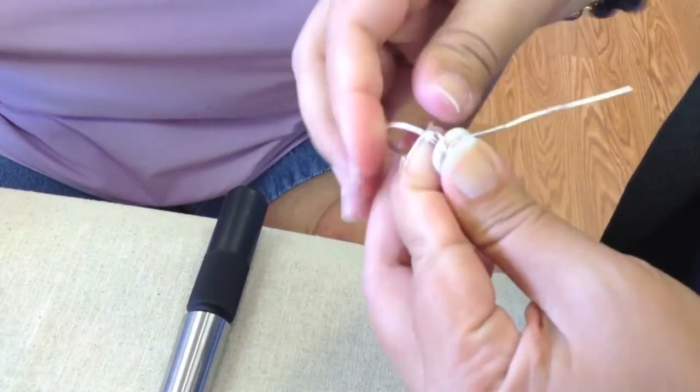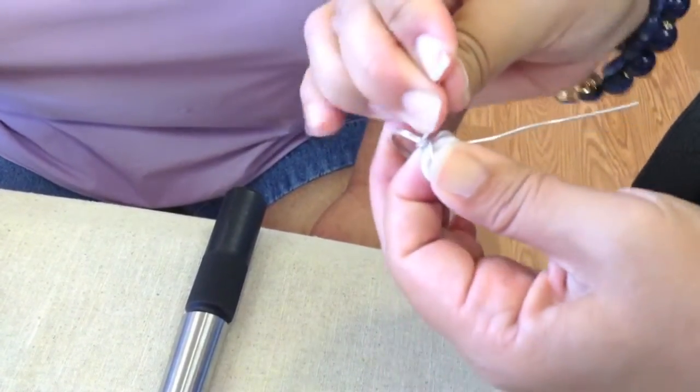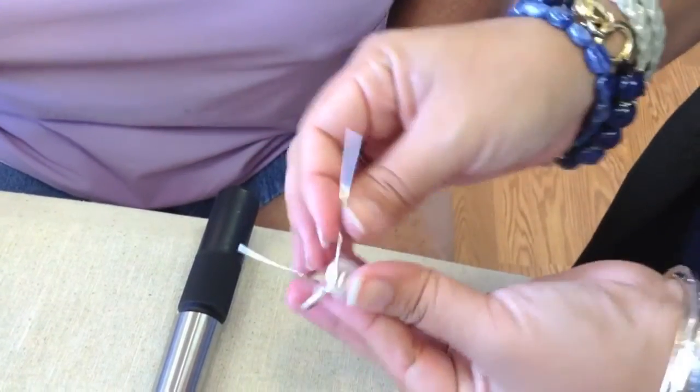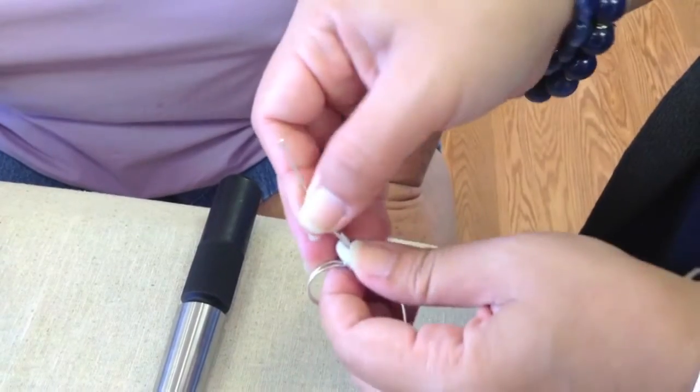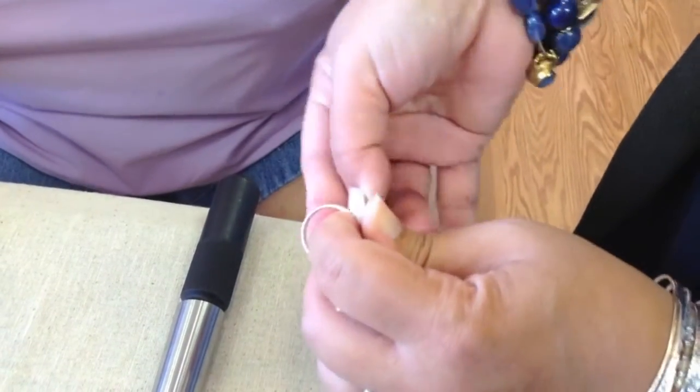Wrap about two or three times and at this point you can either cut the wire, tuck it in and finish it or in a little bit we'll show you how we make a little spiral.